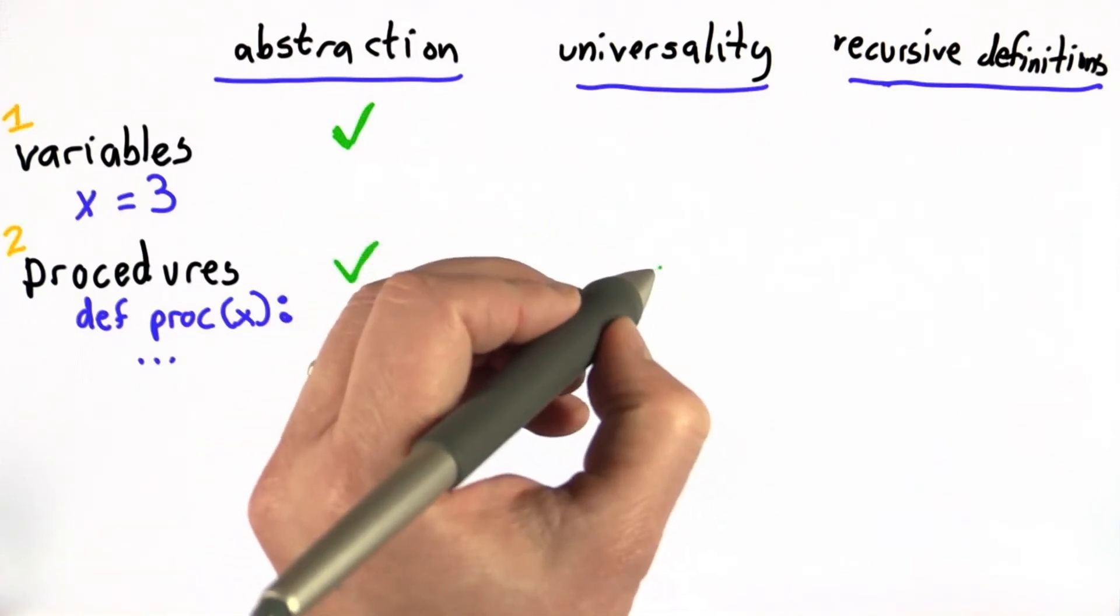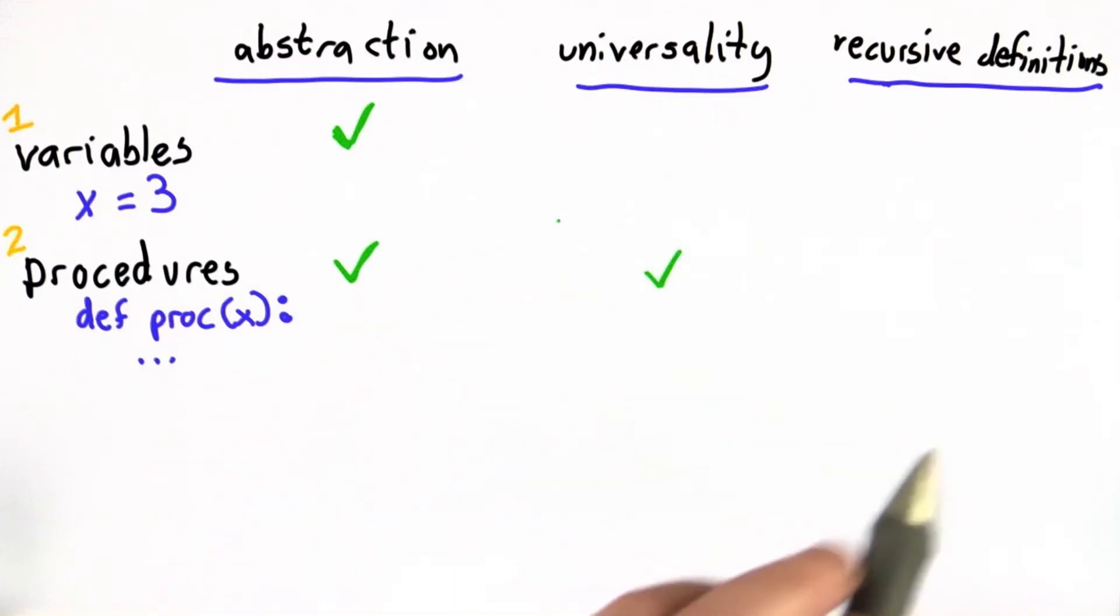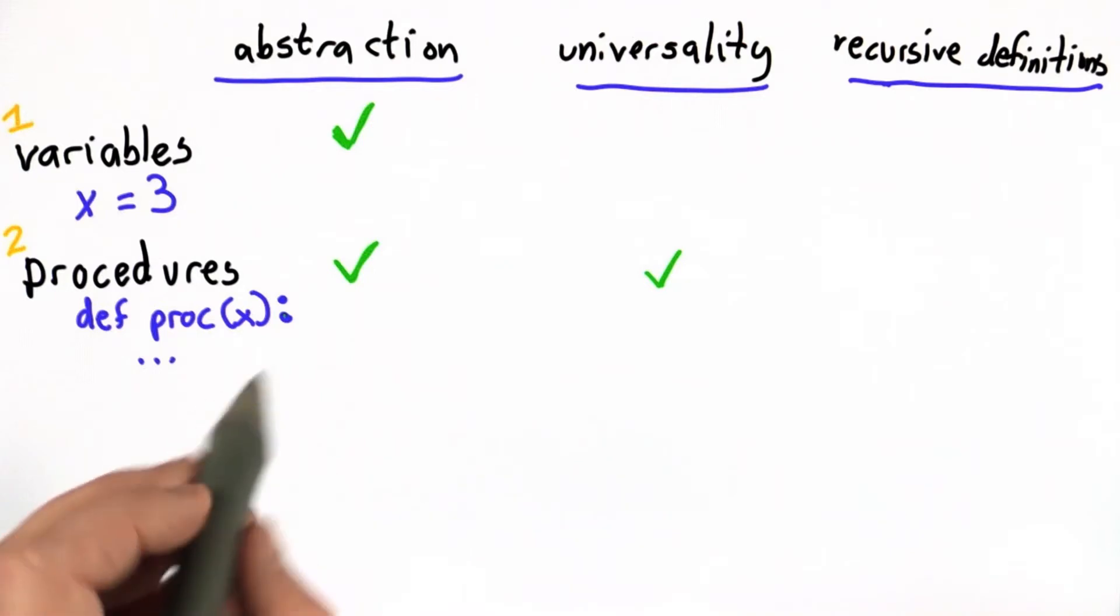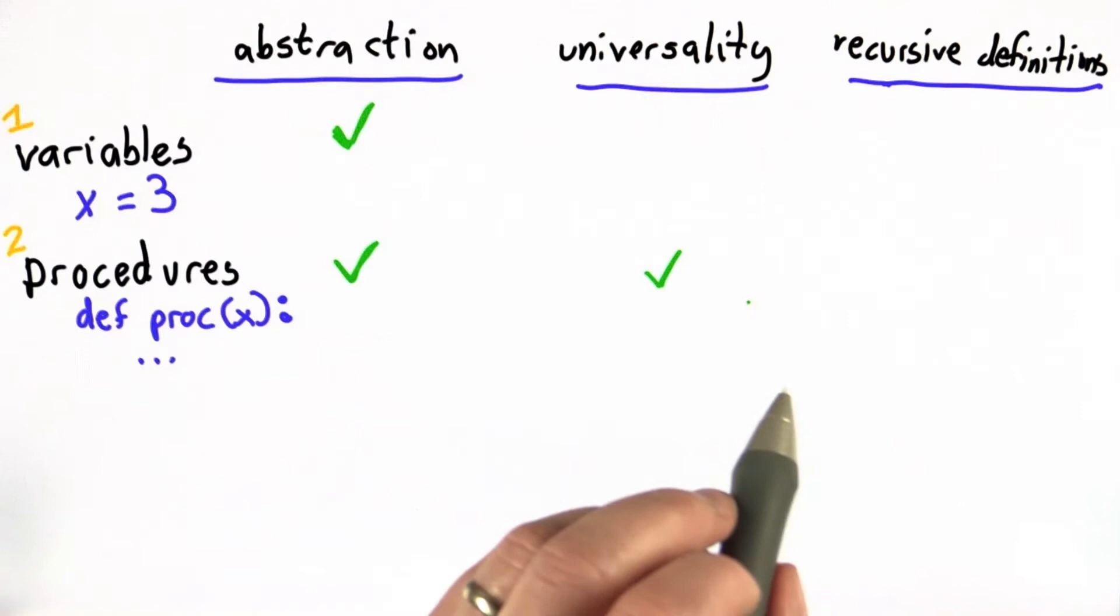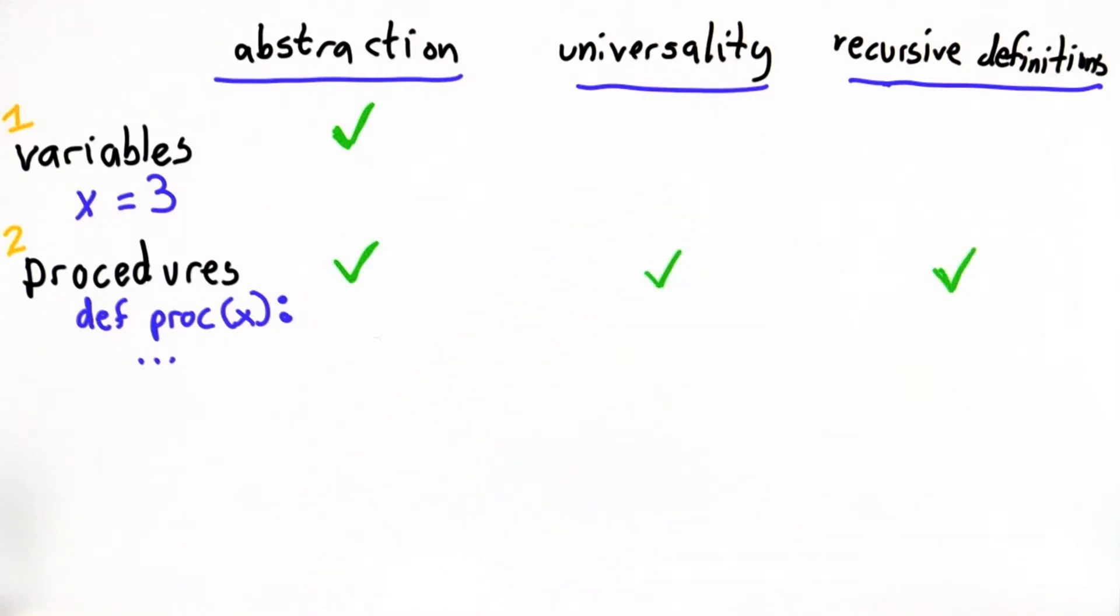Procedures also give us a form of universality. We can use the same procedure to do many different things, and we can define procedures to do everything. As we've seen, we didn't really understand that yet in Unit 2, though, but it is enough to define every possible computer program.